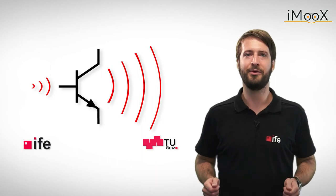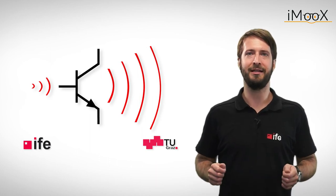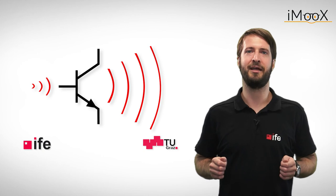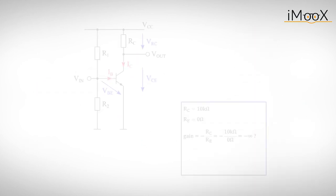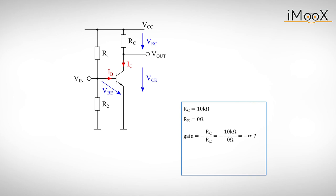Well equipped with our new formulas, we can finally revisit the common emitter amplifier. Previously, we got wrong answers for the voltage gain when we set the emitter resistor to zero.